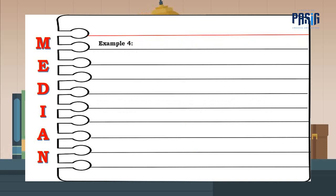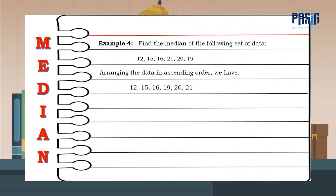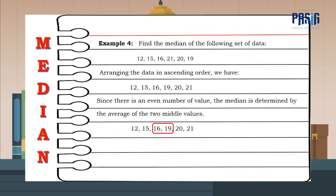Example number 4. Find the median of the following set of data. By arranging the data in ascending order, we have. Since there is an even number of value, the median is determined by the average of the two middle values. And those are 16 and 19. So, we have 16 plus 19 all over 2. And that is 17.5. Therefore, the median is 17.5.